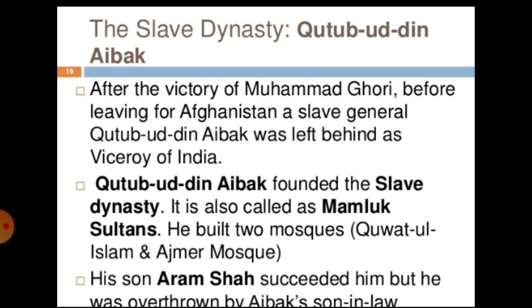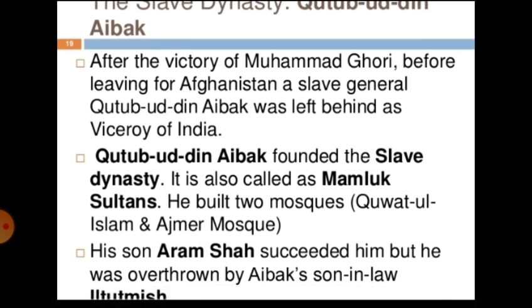Qutbuddin Aibak founded the Slave dynasty, also called the Mamluk Sultanate. He built two mosques — one in Delhi and the Ajmer Mosque. His son Aram Shah succeeded him, but he was overthrown by Aibak's son-in-law.